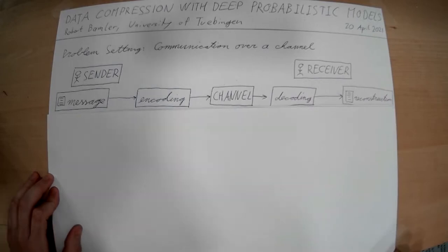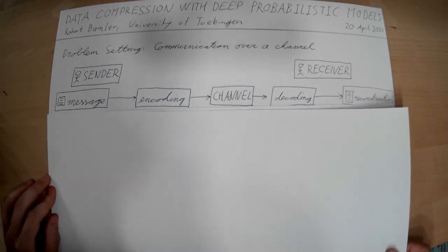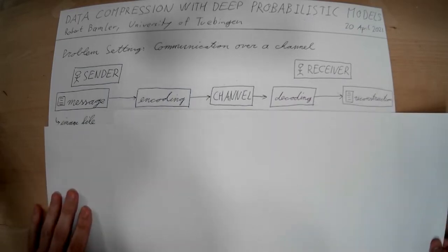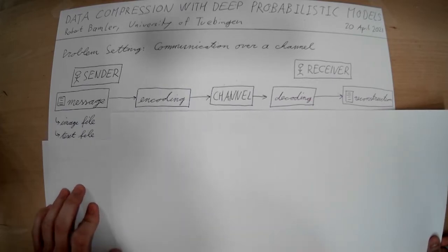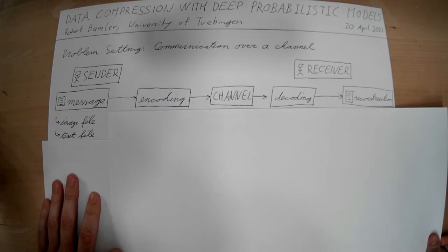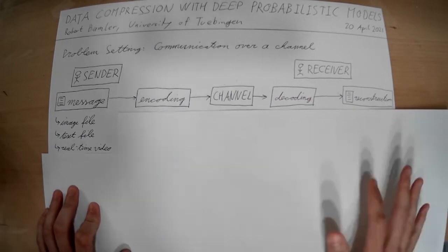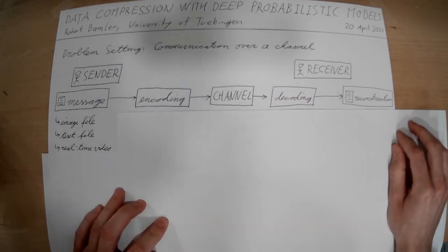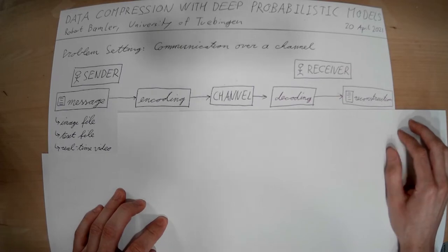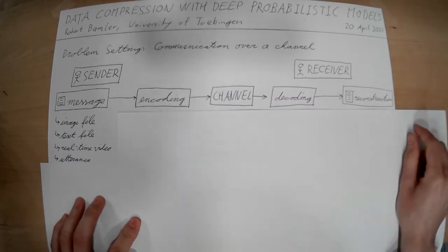Let's go through each of these components in more detail, starting with the message. Example messages you might want to send include a digital file like an image file or a text file. You may also want to send something more ephemeral, like a real-time video — think of a Zoom call or a Skype call. Another kind of message is when the two of us are in the same room talking to each other, so the messages are the words that we pronounce.